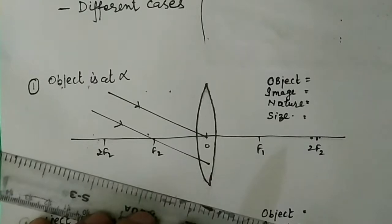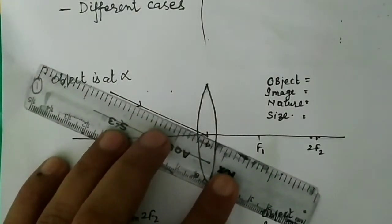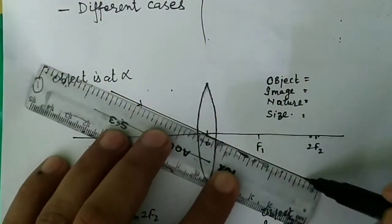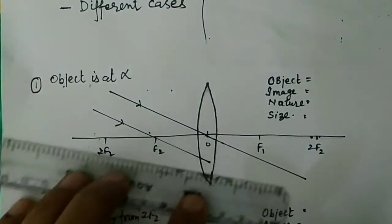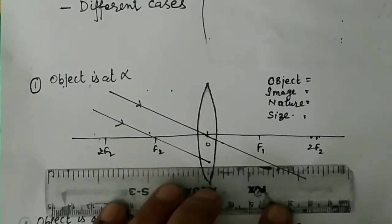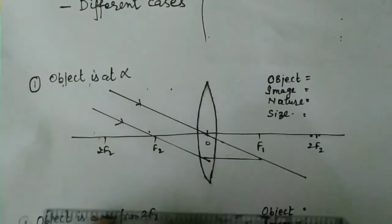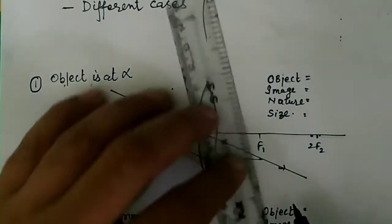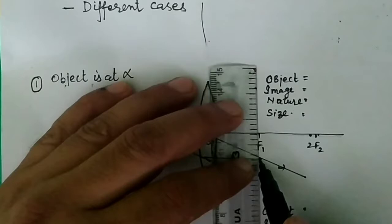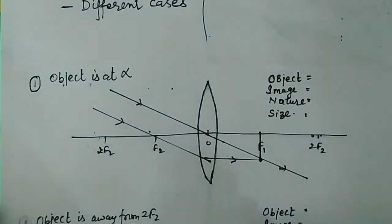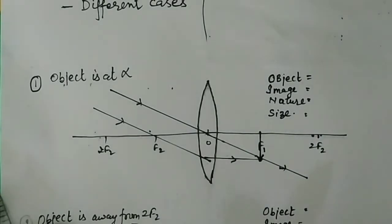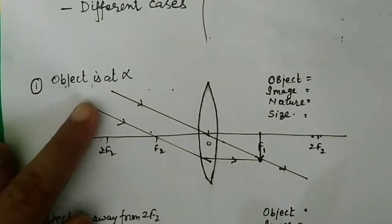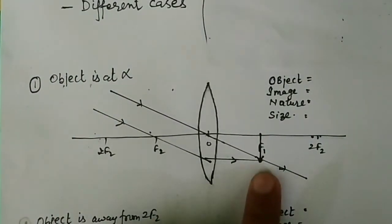Any ray passing through the optical center will go without any deviation. The ray passing through F2 will become parallel to the principal axis. Where the two refracted rays meet — they are meeting at this point — that is our image. Our image is formed at principal focus F1. So when the object is at infinity, the image is formed at principal focus F1.